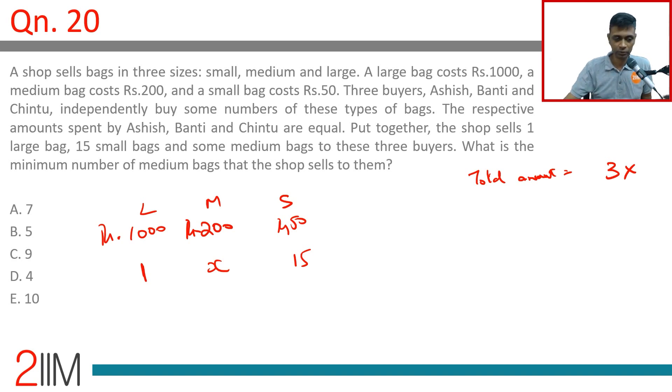So this is 1000, this is 200x, this is 750. Add all this. We should get a multiple of three. Not just that, the total should be greater than 3000. Why? Because one of these guys gets a large bag.